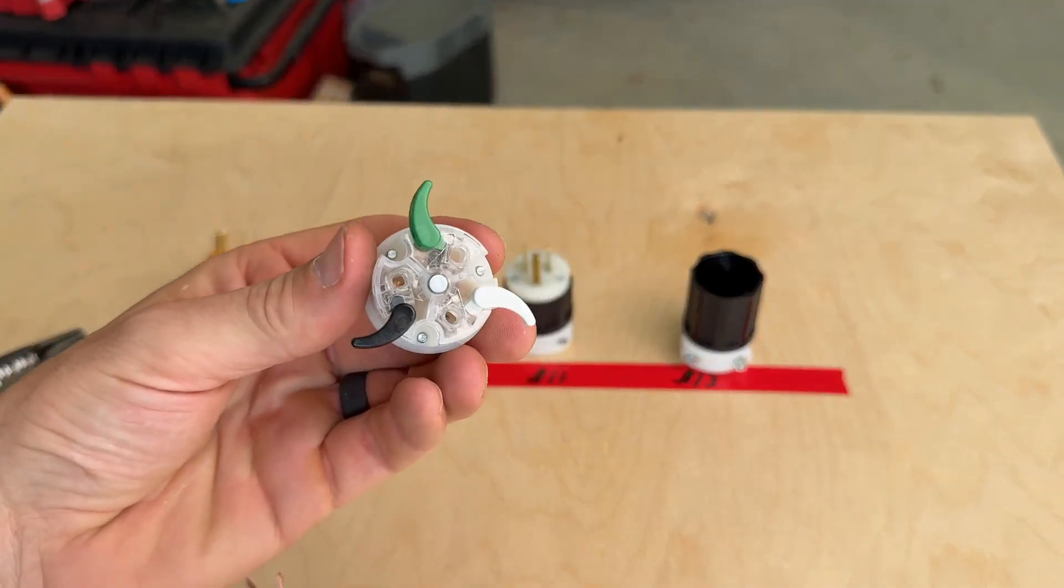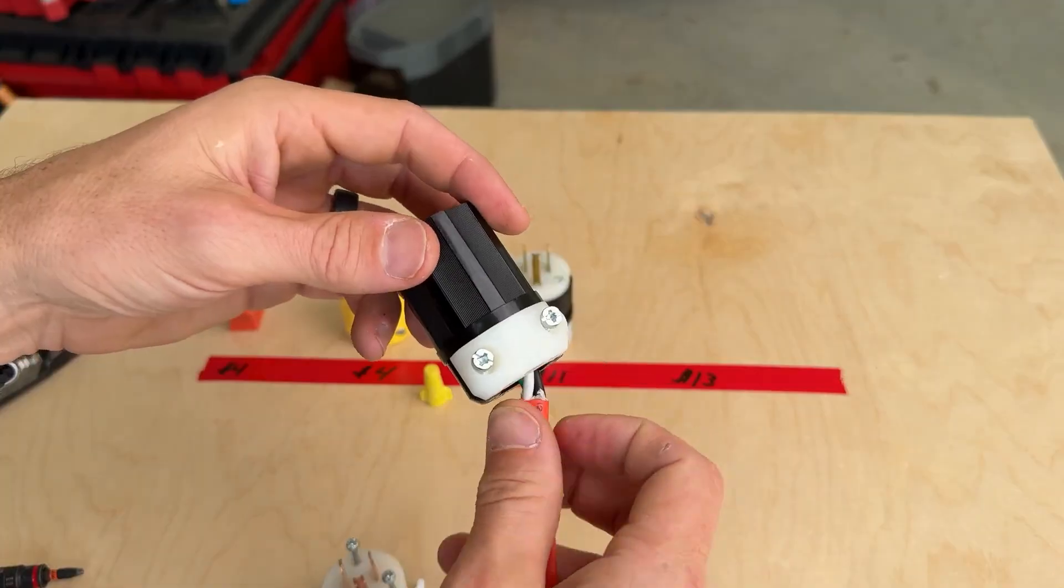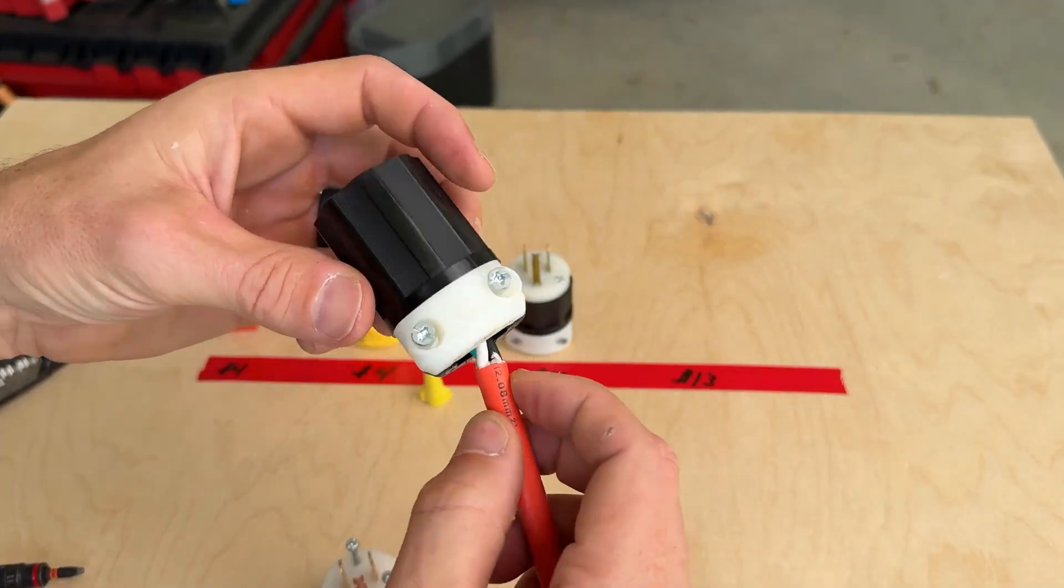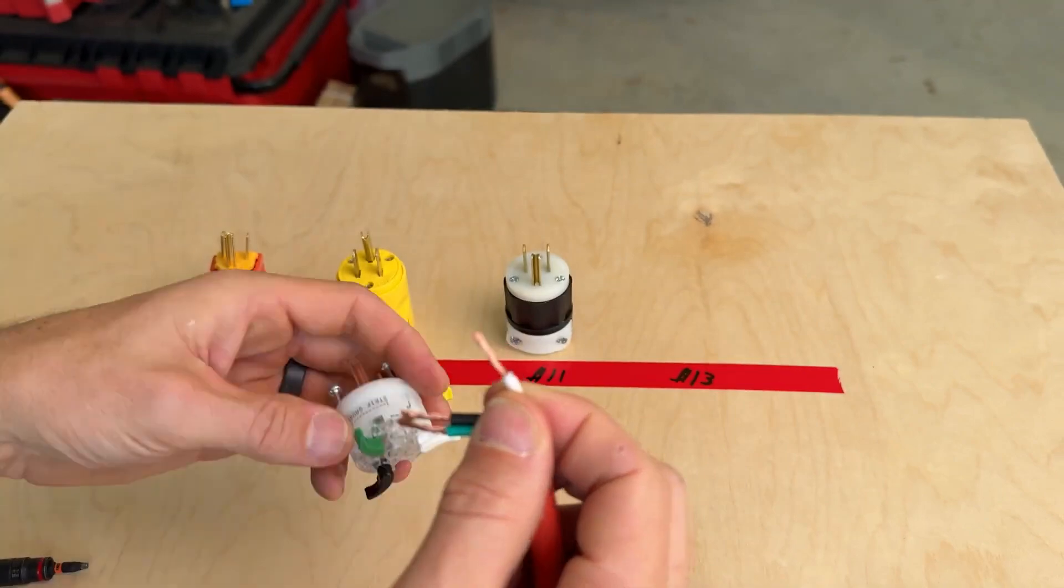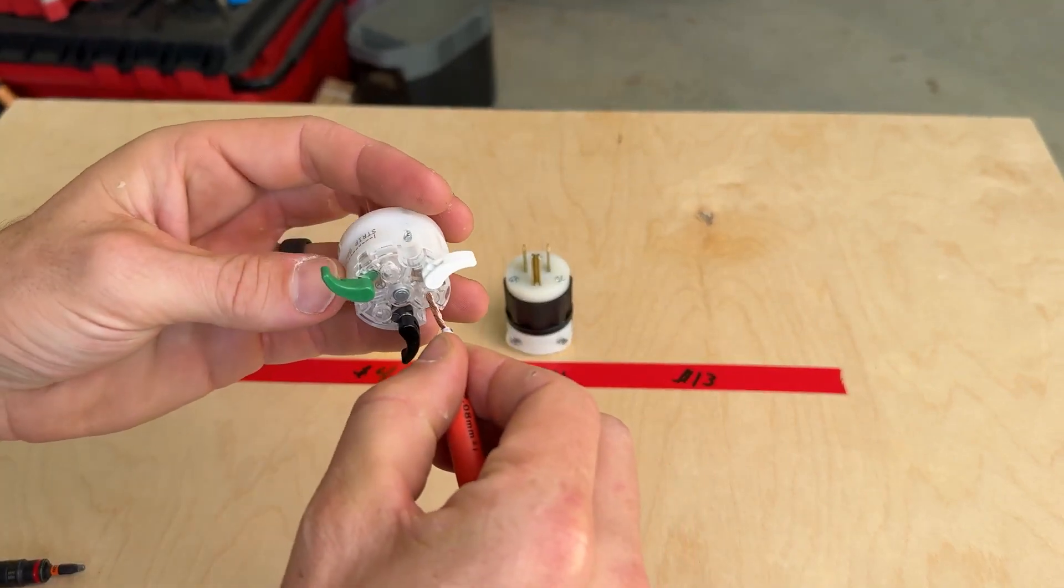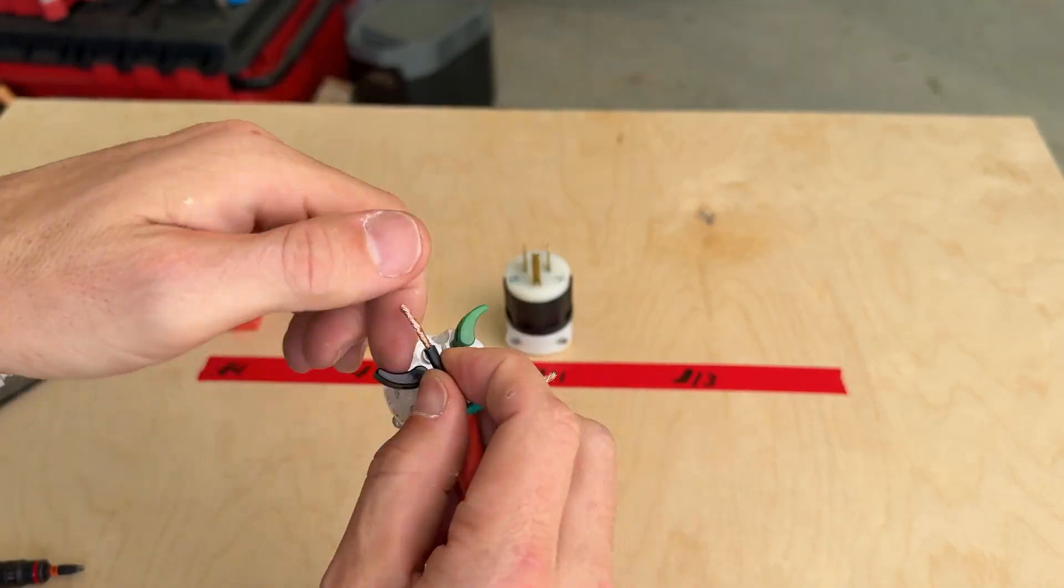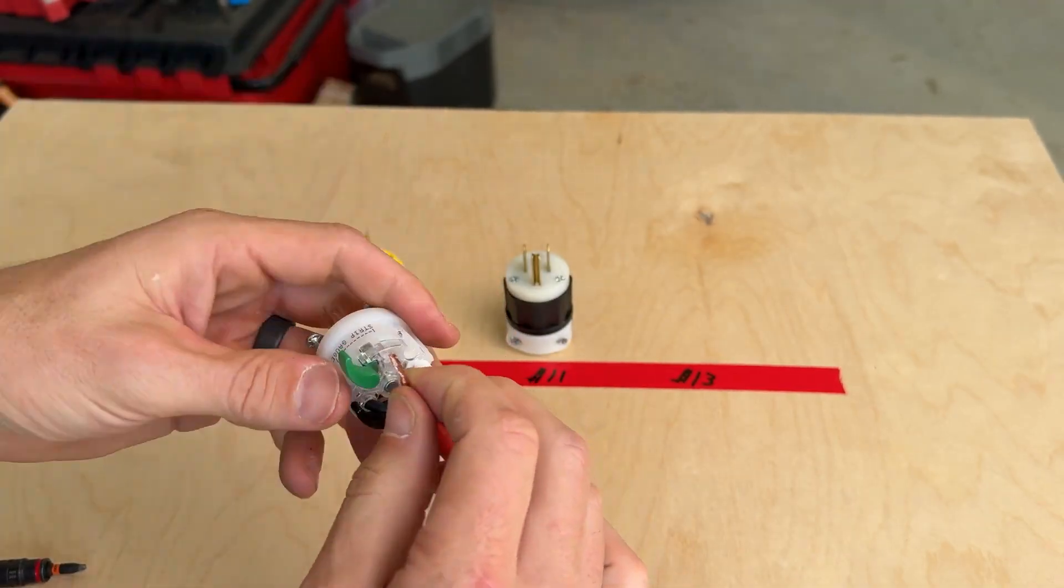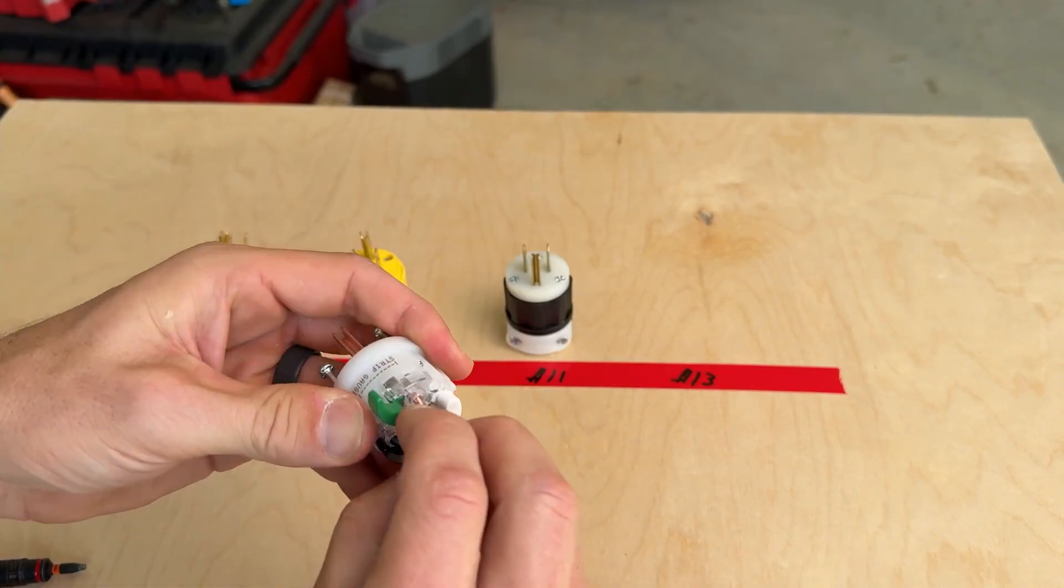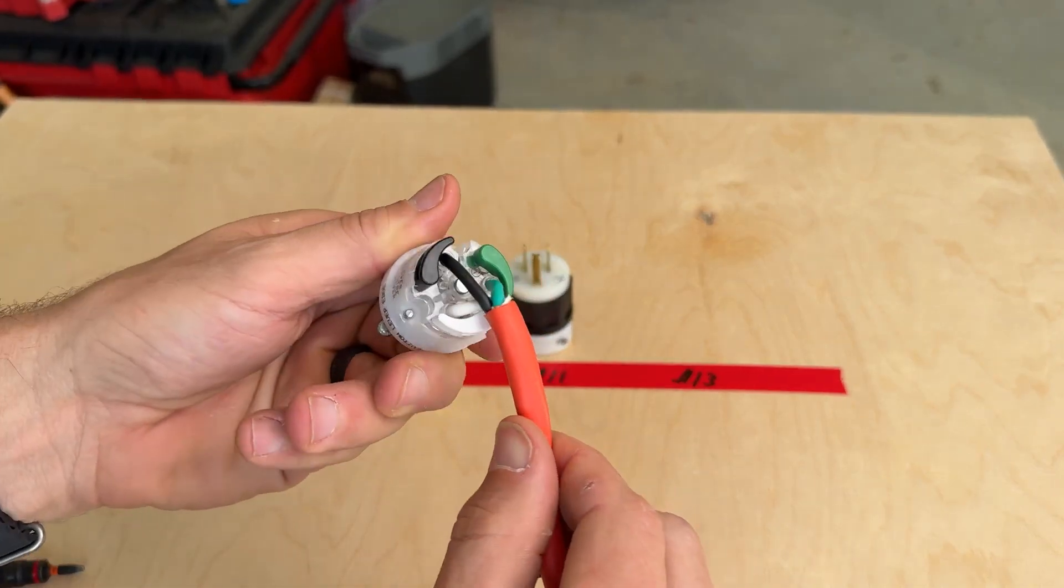All you got to do is pass your wire through your housing. Make sure your stranded wire is twisted, and then you can start landing white on white, your black hot, and then you're just closing down those levers. That is what is making your secure connection. There's no exposed copper in there.